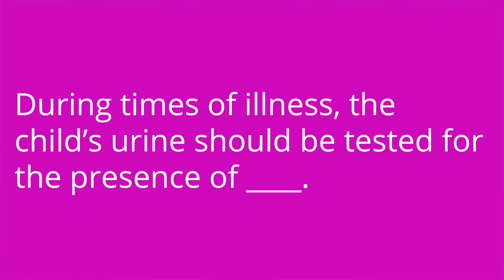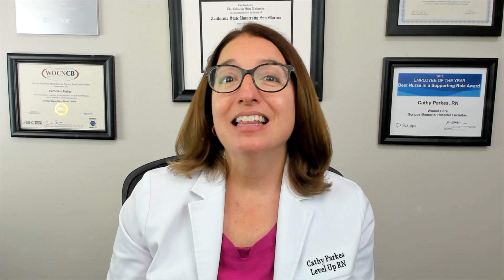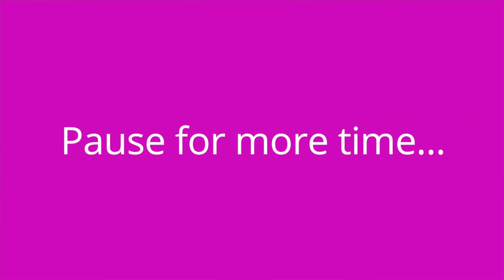Question three: During times of illness, the child's urine should be tested for the presence of blank. The answer is ketones. Question four: What medication can be administered to an unconscious child with hypoglycemia to bring up their blood glucose level? The answer is glucagon. Question five: What acid-base imbalance is typically present with diabetic ketoacidosis? The answer is metabolic acidosis.